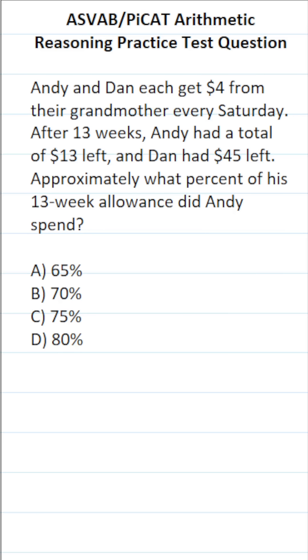So we first have to determine how much their grandmother gave them in total. They get $4 a week for 13 weeks, so that's 13 times 4. 3 times 4 is 12, carry a 1. 4 times 1 is 4, plus 1 is 5. So both of them got $52 from their grandmother over the course of 13 weeks.